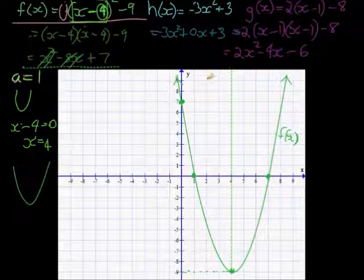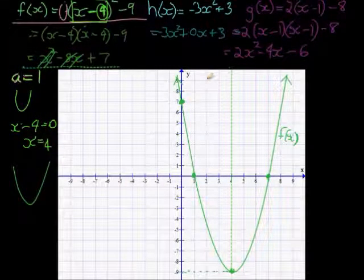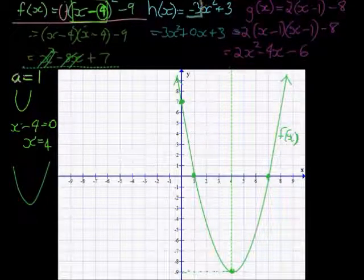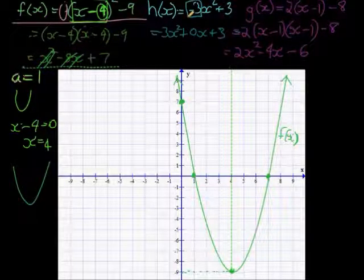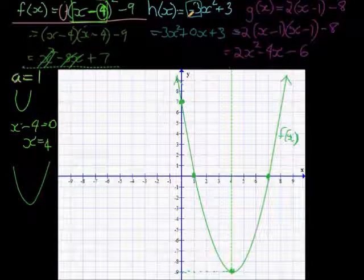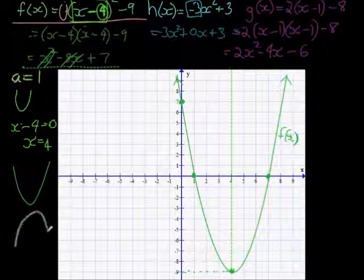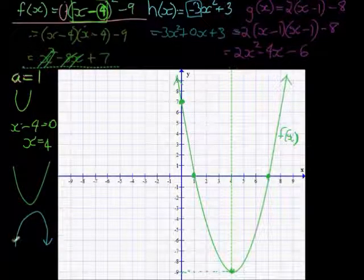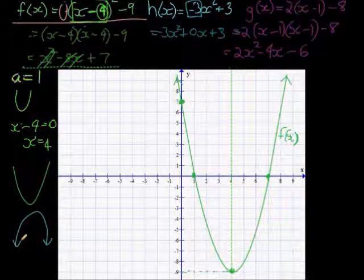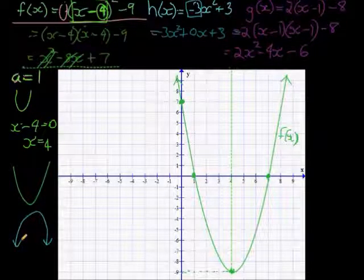First of all, we start with the shape of this graph. We see that the value in front of the square is a negative 3. Negative 3 will be a negative value, or a negative shape, so it will be a downward pointing parabola.